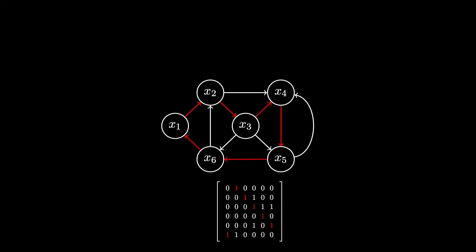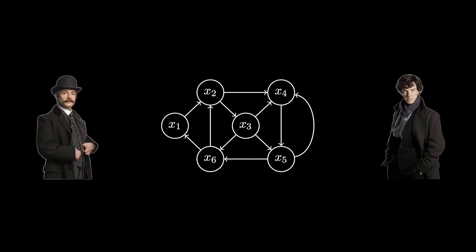We can represent a graph with an adjacency matrix. So, let's assume that Sherlock knows a Hamiltonian cycle in the graph, and Watson does not. Sherlock wants to prove to Watson that he knows the cycle without revealing anything else. How can Sherlock do that? Take a moment to think about potential protocols.